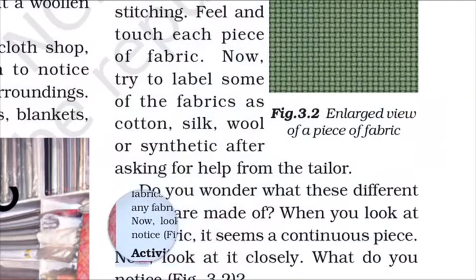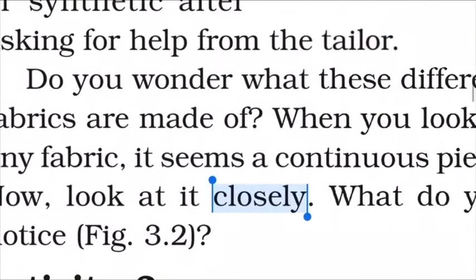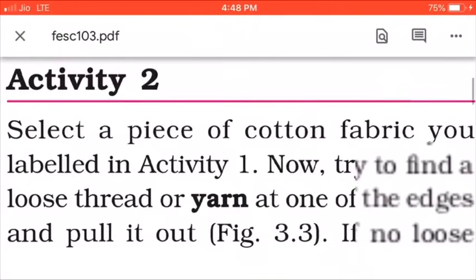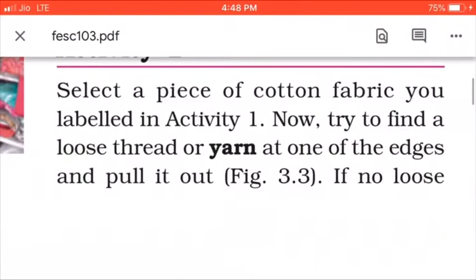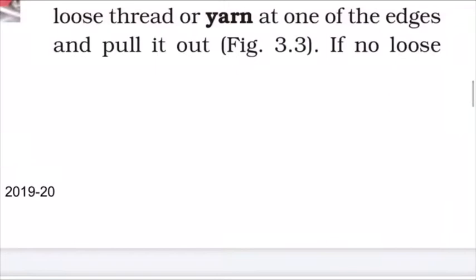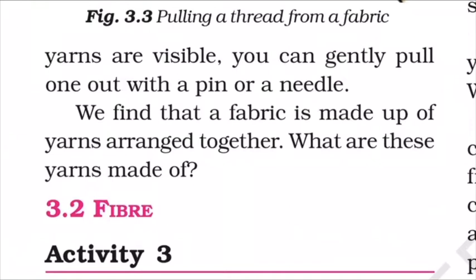Now look at it closely — what do you notice? Activity Two: Select a piece of cotton fabric you labeled in Activity One. Now try to find a loose thread or yarn at one end of the edges and pull it out. If no loose yarns are visible, you can gently pull it out with a pin or a needle. We find that a fabric is made of yarns arranged together.